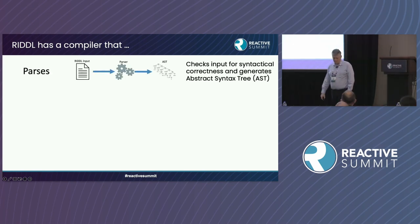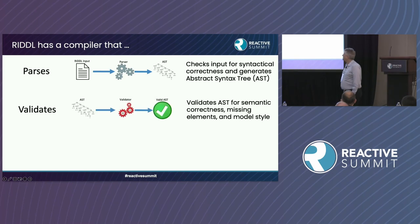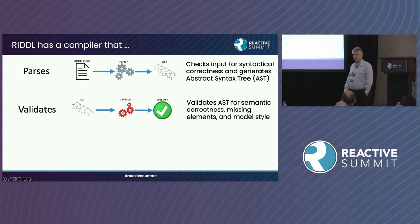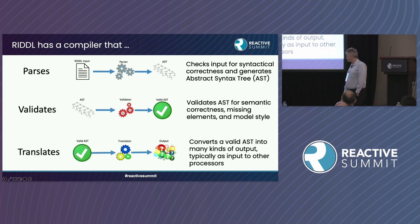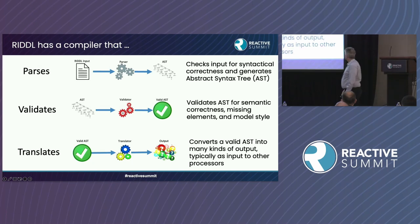The main thing I've built is a compiler with three phases. First, it parses — checking for syntactical errors in the input. Second, it validates — ensuring the model you've created in the RIDDLE language is correct and complete, and it will also comment on your style. Third, it translates — taking the valid AST that has been compiled through parsing and validating and translating it into anything you want. Several translations already exist, and you can program it to do others.